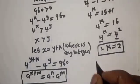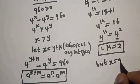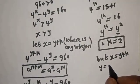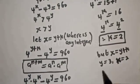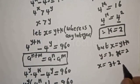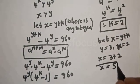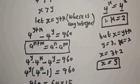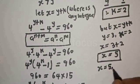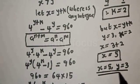But recall that x equals y plus k. We already know y equals 3 and k equals 2. So x equals 3 plus 2, which gives x equals 5. This is the value of x. Therefore our final answers are x equals 5 and y equals 3.